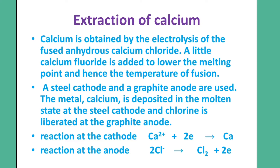The metal calcium is deposited in the molten state at the steel cathode. Chlorine is liberated at the graphite anode. Calcium metal is deposited at the cathode in the molten state. The anode deposits chlorine. Finally, we will see the reaction at the cathode and the anode equation.